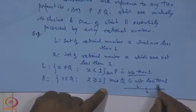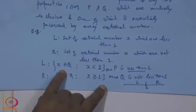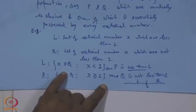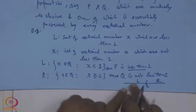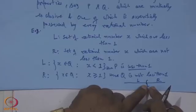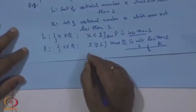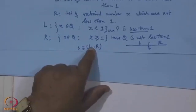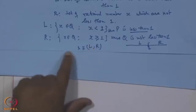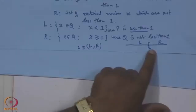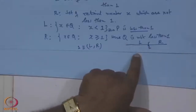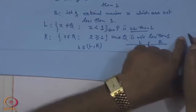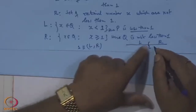One is a rational number which can separate rational numbers into two classes: L contains those less than 1, and R contains those not less than 1 — including 1 itself. This section (L, R) represents the rational number 1. This is known as a cut.